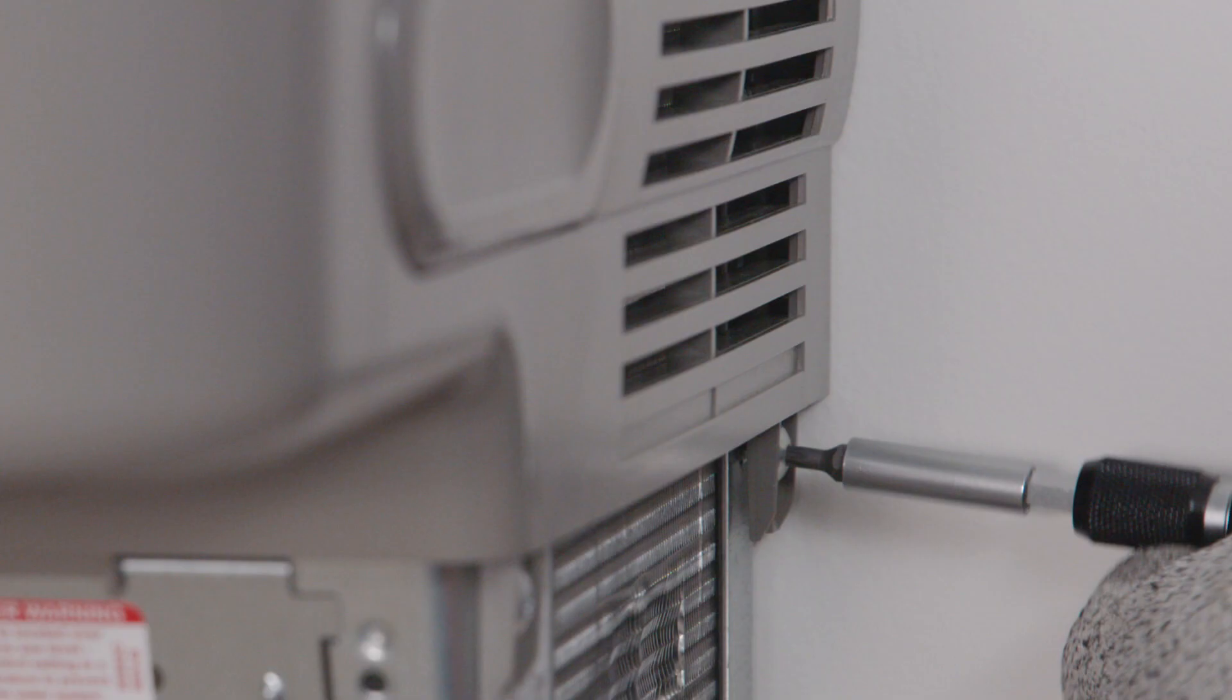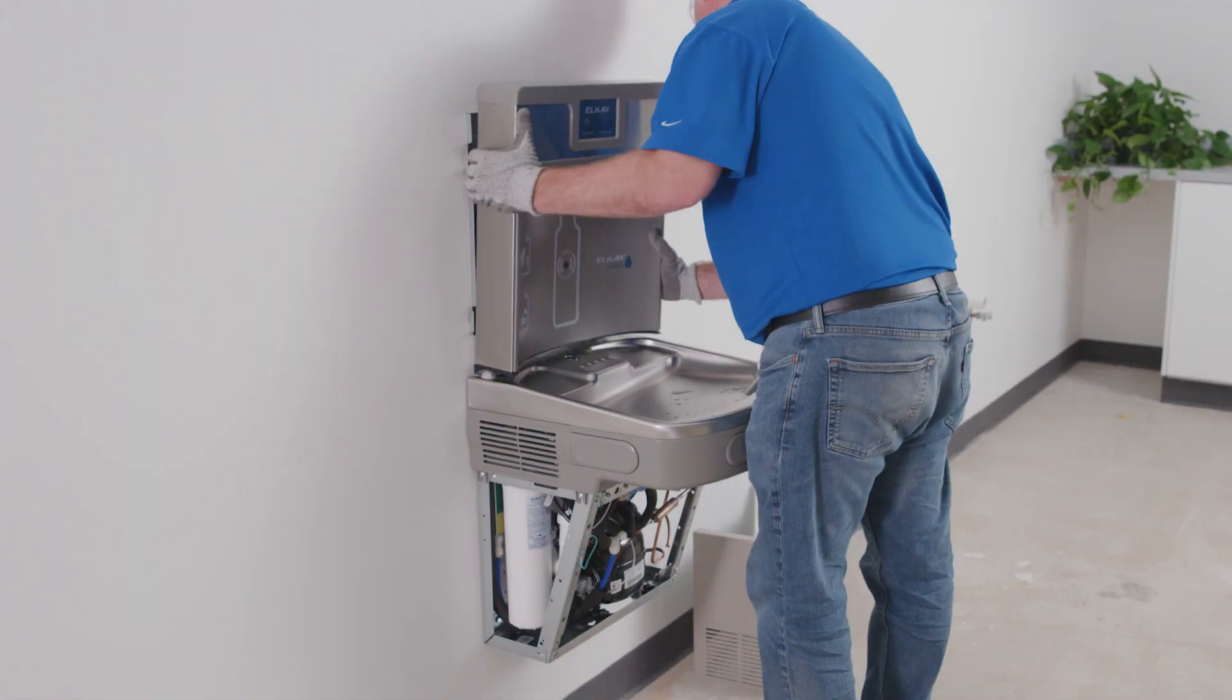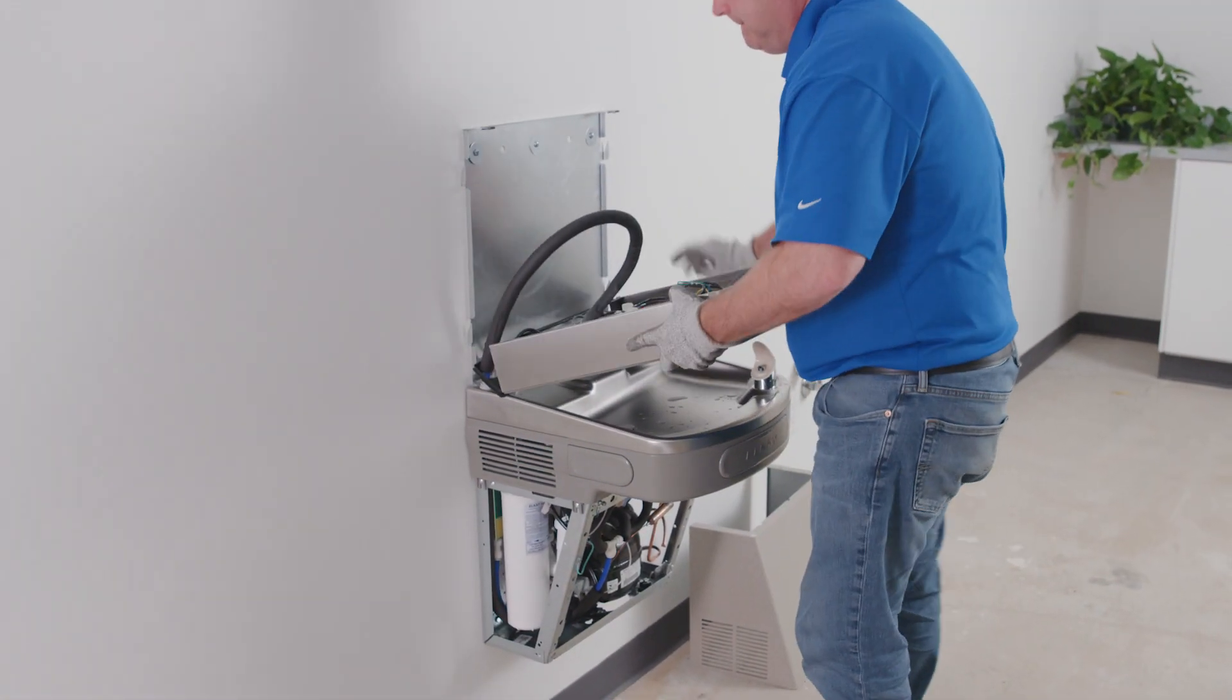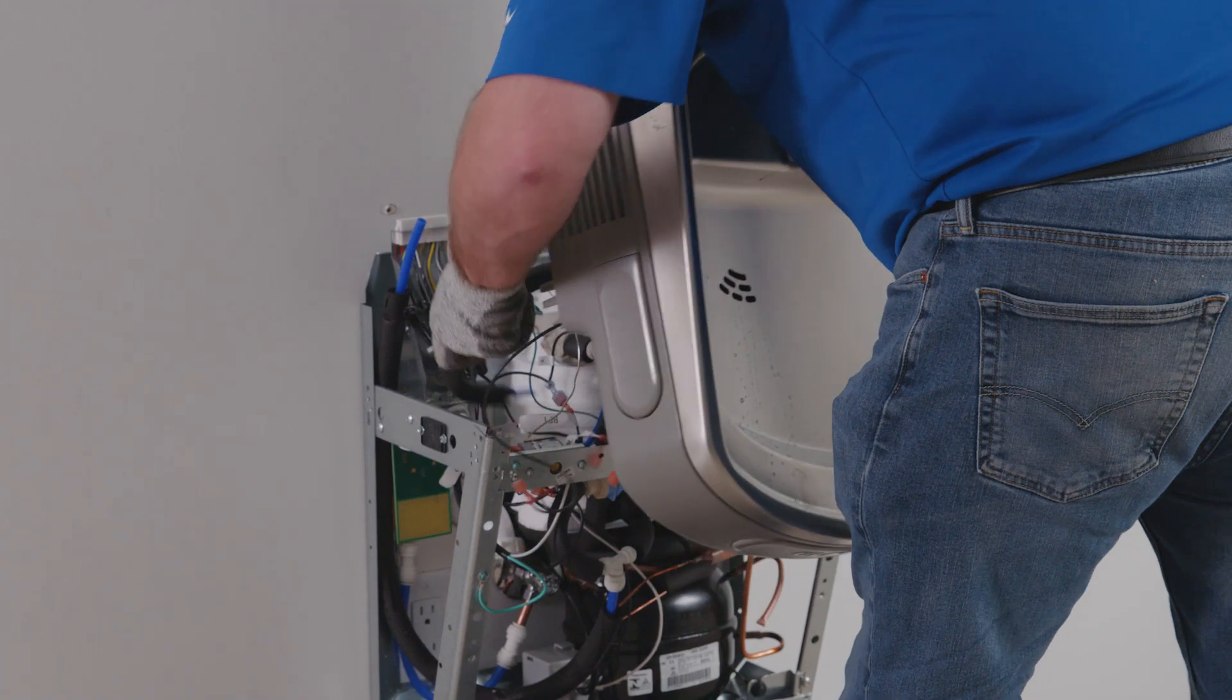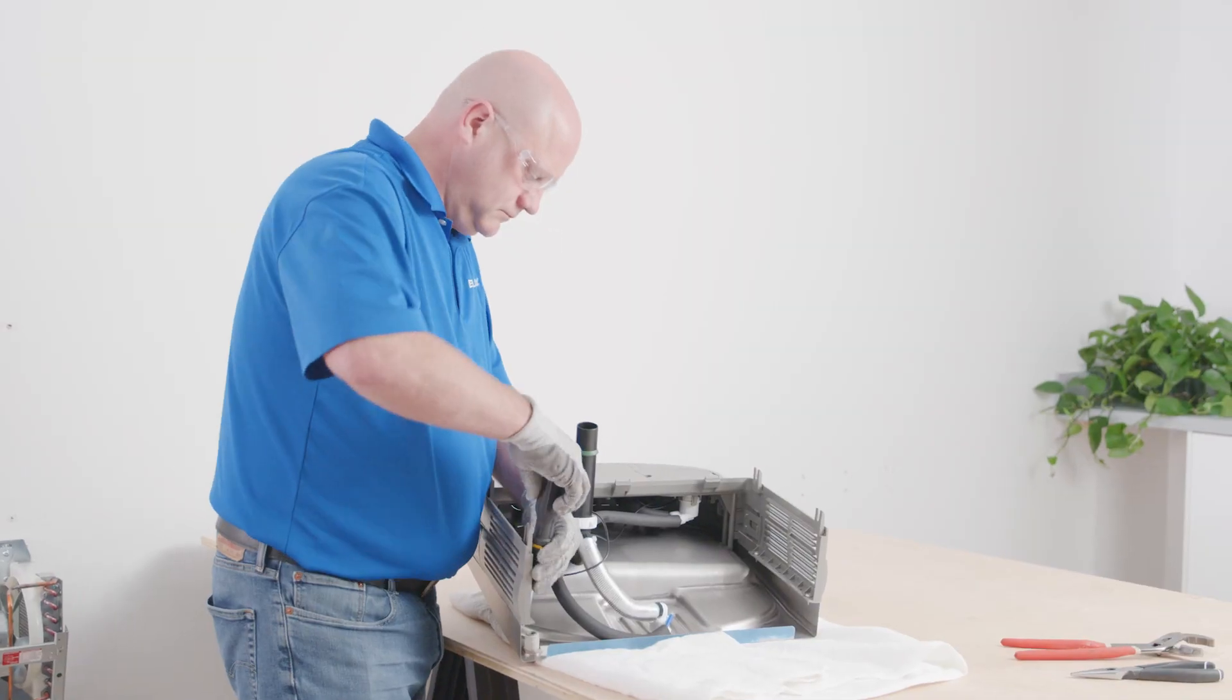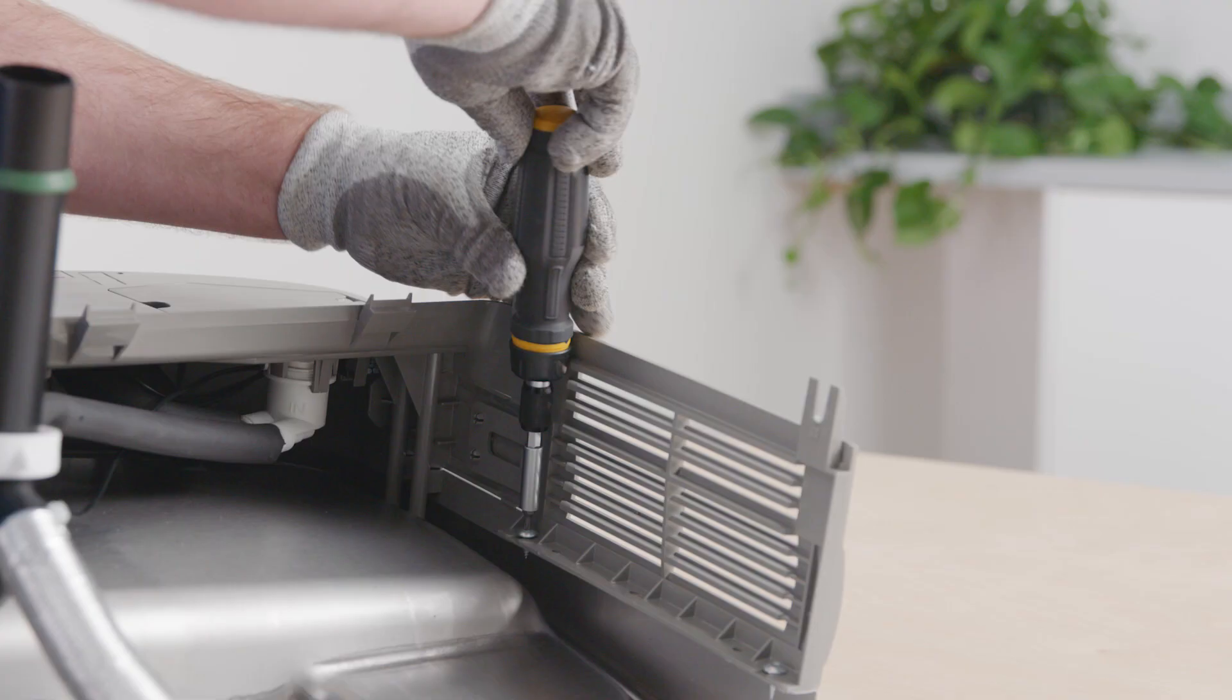If it's a cooler and bottle filling station combination unit, you will need to remove the bottle filler. Remove the basin from the basin and shroud assembly.